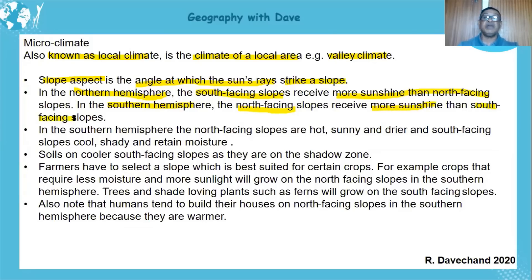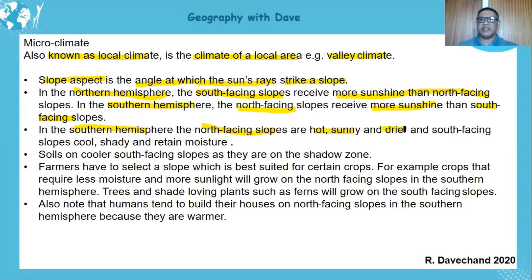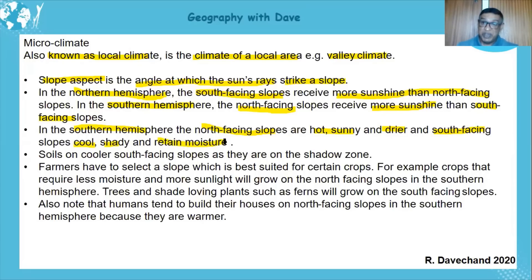Paying specific attention to the southern hemisphere: north-facing slopes are hot, sunny, and dry because they're getting the sunlight, leading to more evaporation. On the south-facing slopes, they are cool, shady, and they retain some of the moisture. So there is a clear difference between the two slopes, and obviously this is going to affect activities.